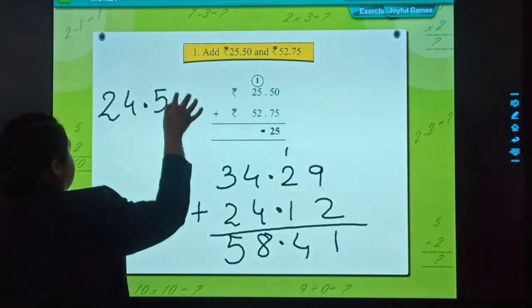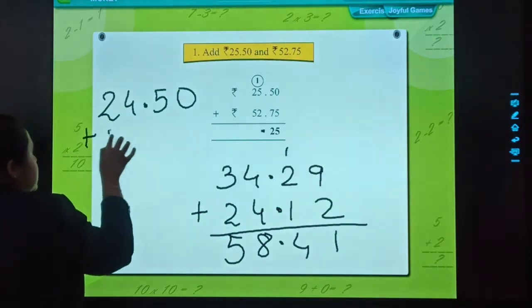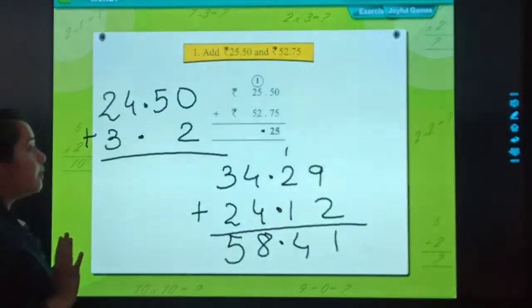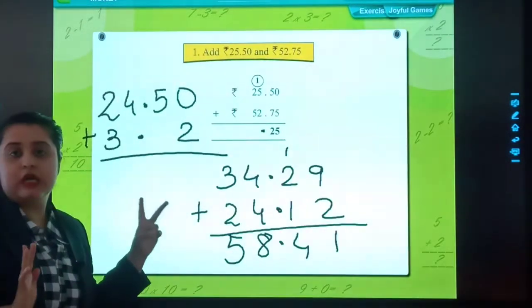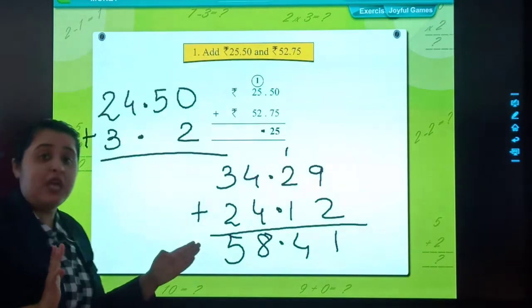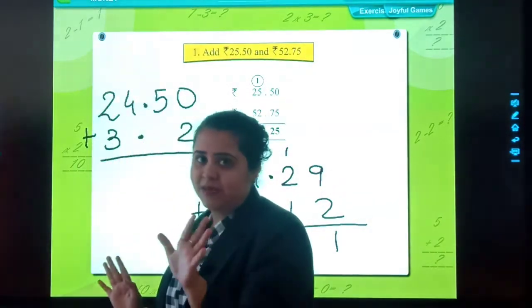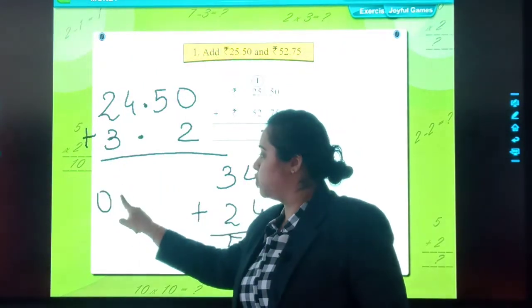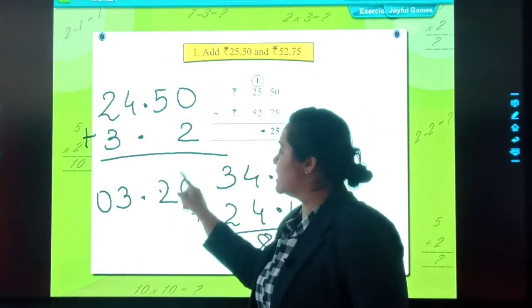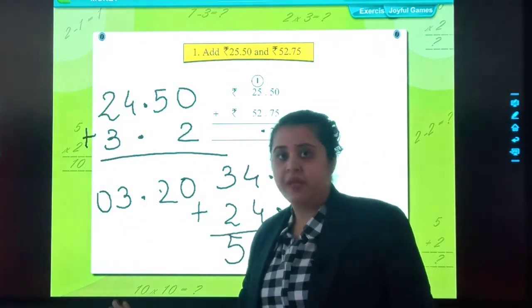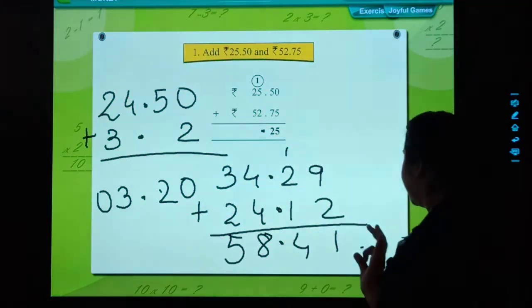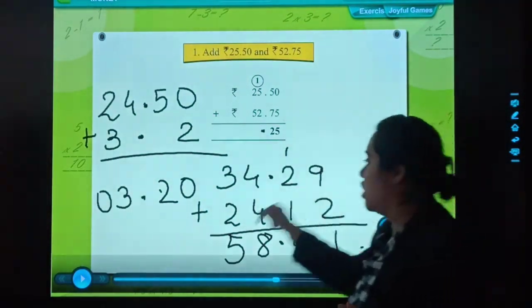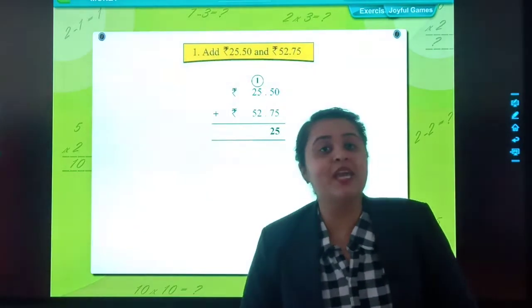24.50 plus 3.2. Point below point, you should not change the place values. It is rupees 3 and 20 paise. So you have to write this 0, rupees 3 and 20 paise in this way. Understood students? I am sure you have understood this once. In the test, the order will be changed.